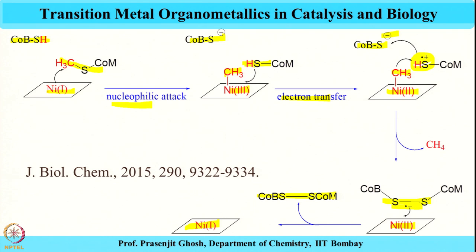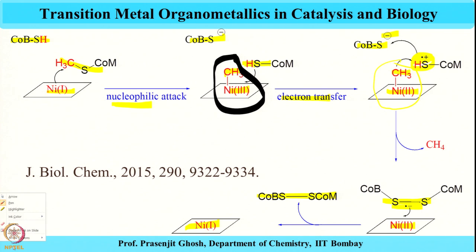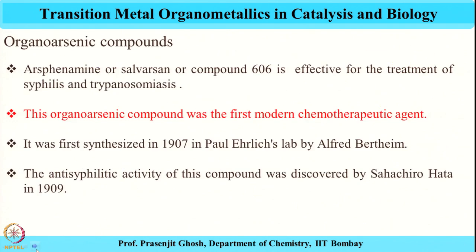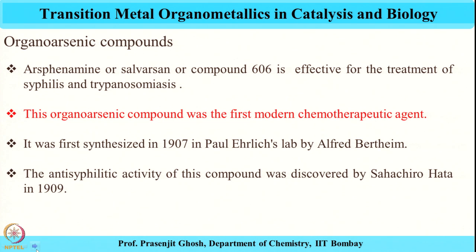This is a very interesting example, and the organometallic connection is the proposed nickel-methyl bond suggested to form during methane production by the enzyme MCR, which contains the cofactor coenzyme F420. This nickel-methyl species is key to methane production. We now move on to another important class of compounds — organoarsenic compounds.